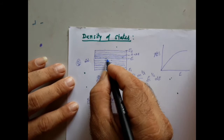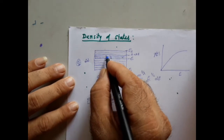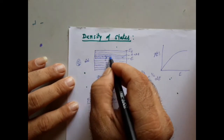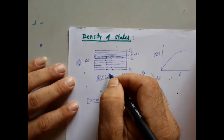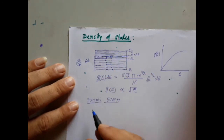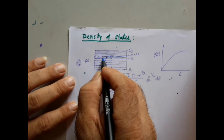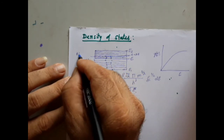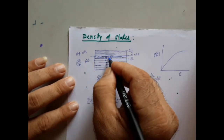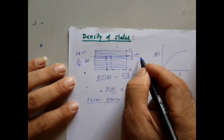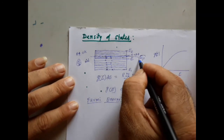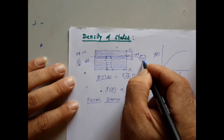At absolute zero Kelvin, we fill electrons up to a particular energy level. All energy levels up to that point are completely filled, and above that energy the levels are totally empty. Therefore, the highest energy level at absolute zero Kelvin where all electrons have been filled is called the Fermi level. The energy corresponding to the Fermi level is represented as EF, called Fermi energy.